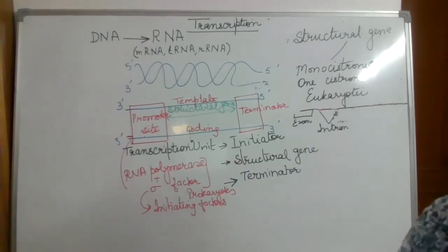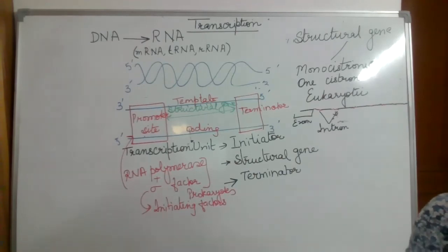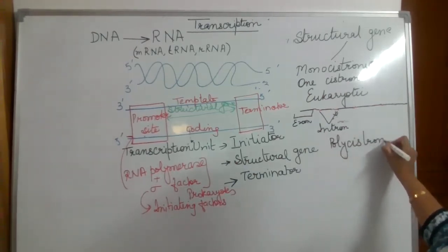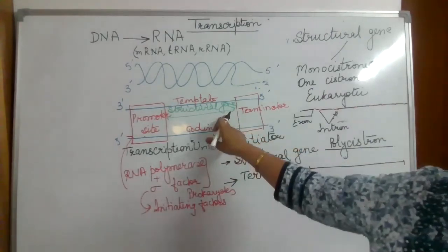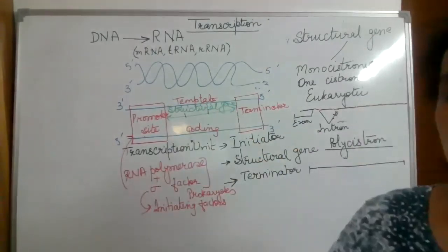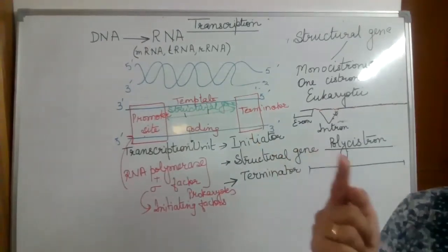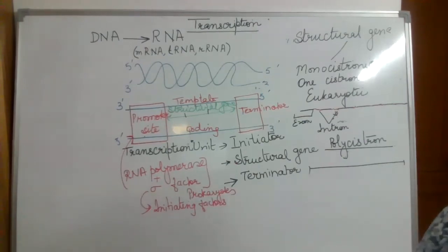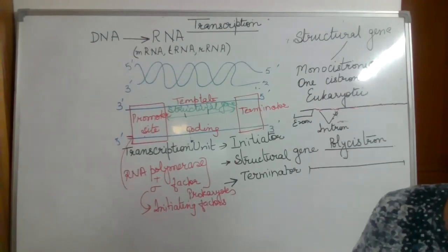In prokaryotic cells it is simpler — they have polycistronic structural genes. Polycistronic means a continuous coding sequence is present, so one transcription unit in prokaryotes may have structural genes made up of multiple cistrons, with one promoter site and one terminator site. In eukaryotes, one transcription unit has one promoter site, a structural gene having only a single monocistron, and a terminator site.